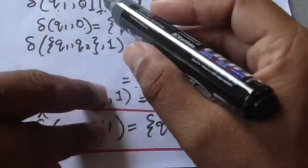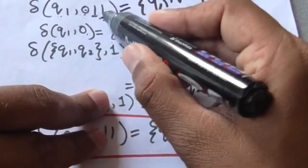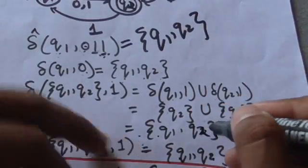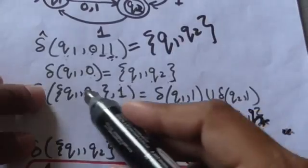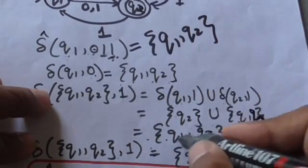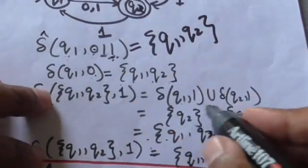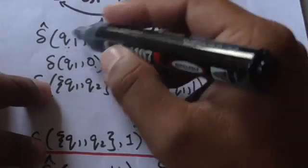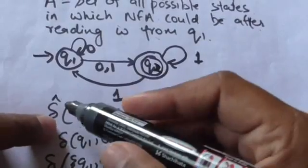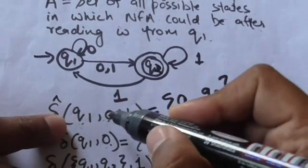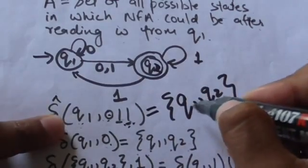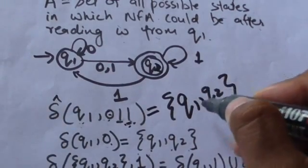Now apply the third input symbol of the string, that is 1, to this set of states {q1, q2}. When we apply 1 to this set we again get the set {q1, q2}. So the output of the extended transition function for present state q1 and string of input symbols 0 1 1 is the set {q1, q2}.